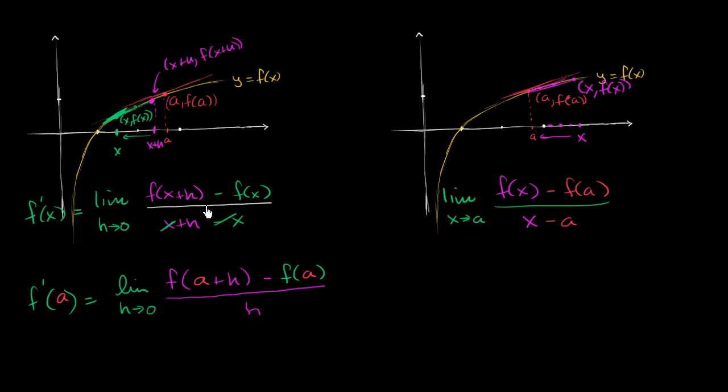So this is the more standard definition of a derivative. It would give you your derivative as a function of x, and then you can input the particular value of x. Or you could use the alternate form of the derivative. If you know that you're just looking to find the derivative exactly at a, you don't need a general function of f, then you could do this. But they're doing the same thing.